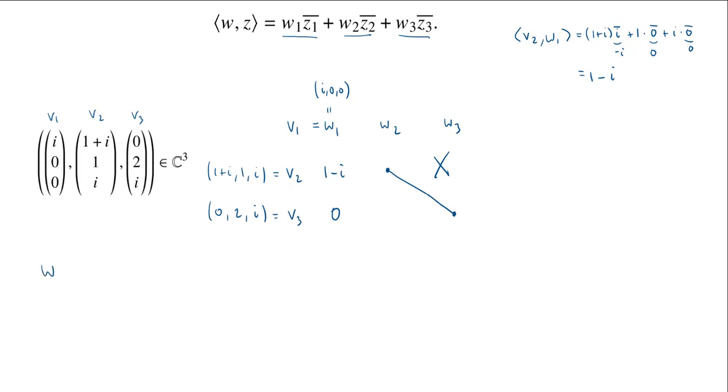Let's jump into it. I want to compute W2, and the Gram-Schmidt formula tells us that I need to take V2, then subtract the inner product of V2 and W1 divided by the square of the norm of W1. I'm going to need all those squares of norms, so let me write these on the side. I'll compute these as we go.